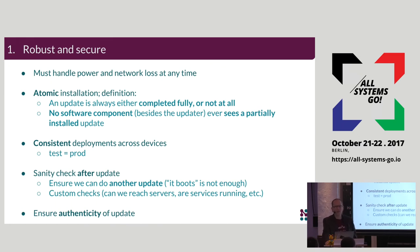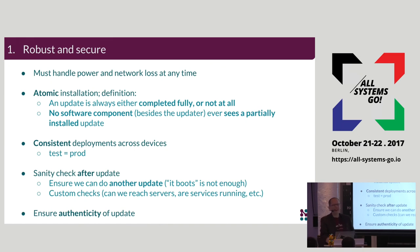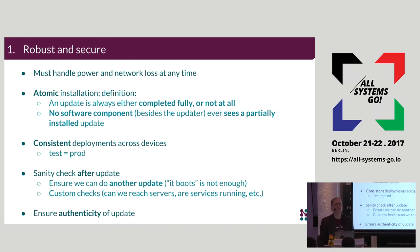Nothing except the updater client ever sees a partially installed update. If there's an issue with power, network connectivity, or some kind of corruption in the image, that's all handled by the client and the actual system will never run in that state. Updates are always atomic — they have to be. With the dual AB root file system, that's the primary reason we chose it: to allow that atomic update. The nice thing from the development perspective is this allows very consistent deployments. You know exactly what's on the device and it should be exactly what you tested in the lab.